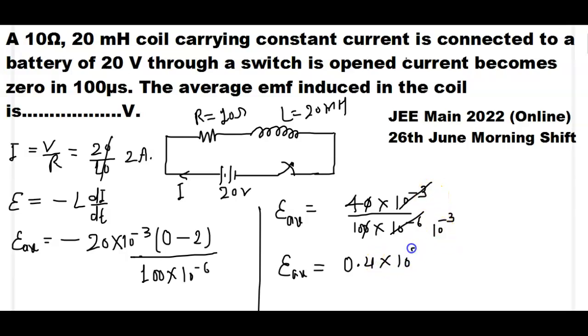So average EMF becomes 0.4, here 10 to the power minus 3 goes to numerator becomes 10 to the power plus 3. Then 0.4 into 10 to the power 3, so average EMF becomes 400 volt.